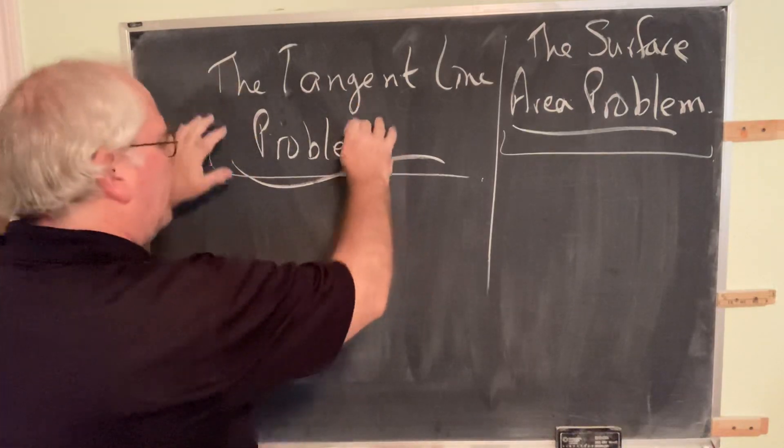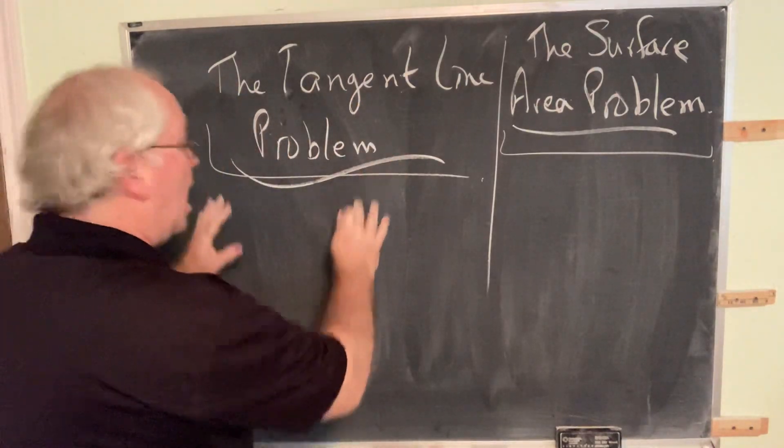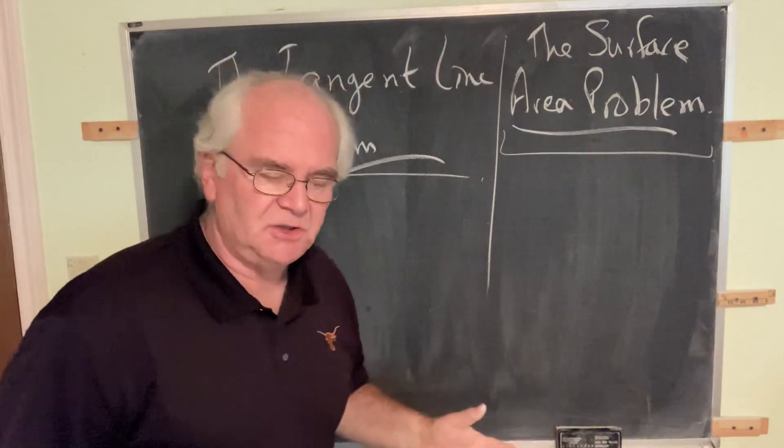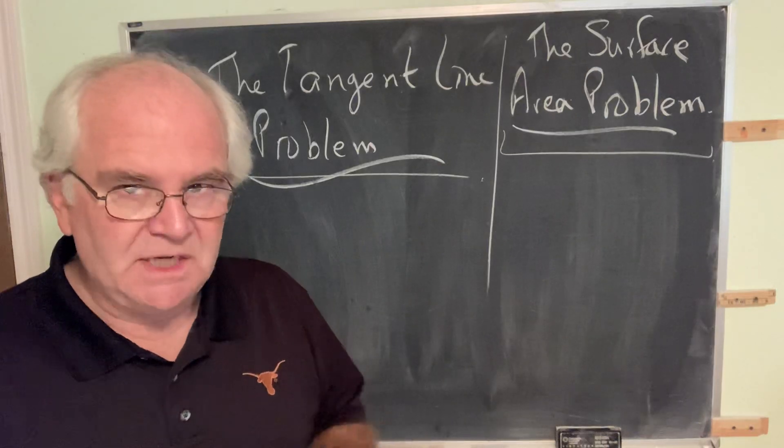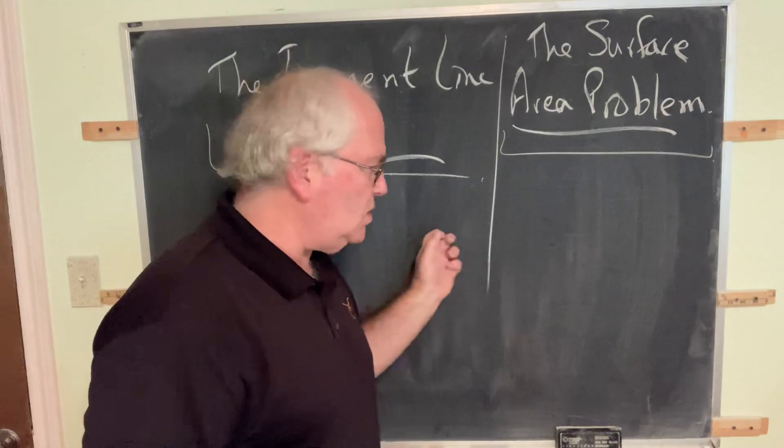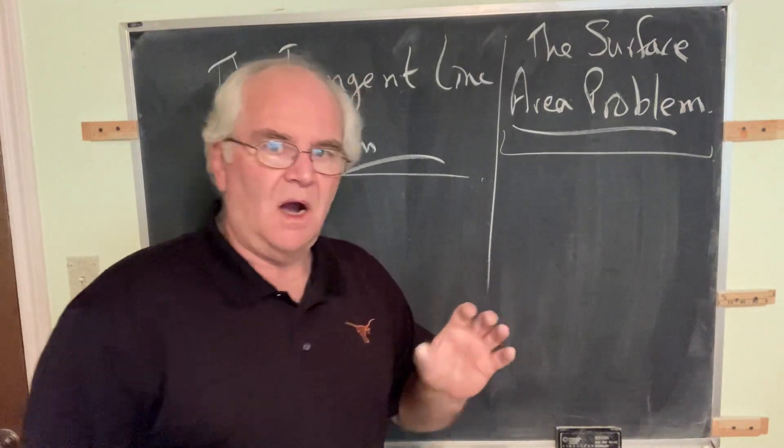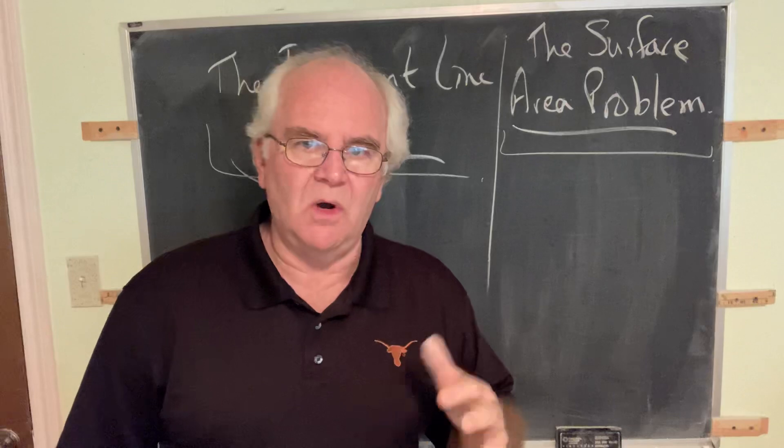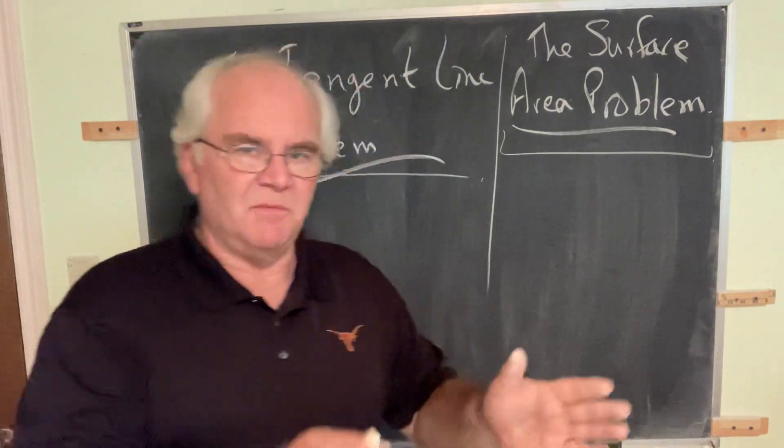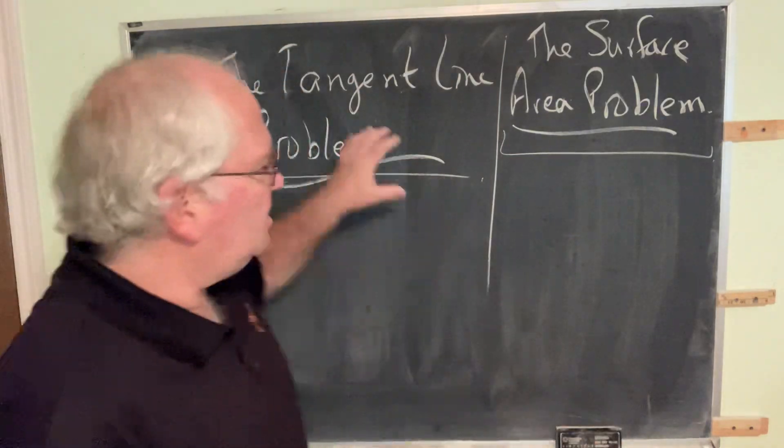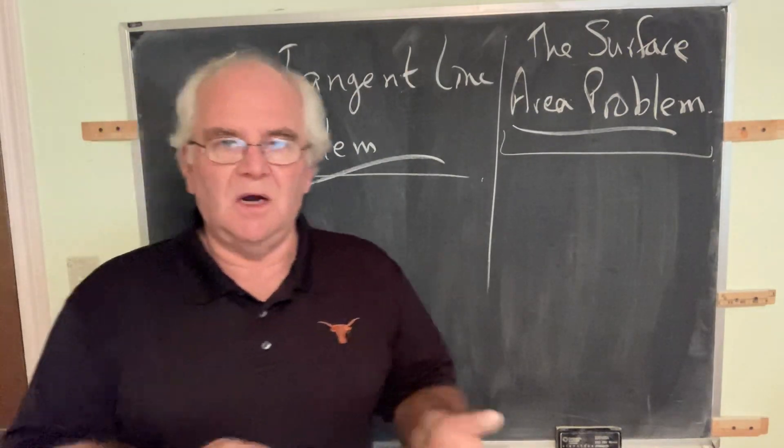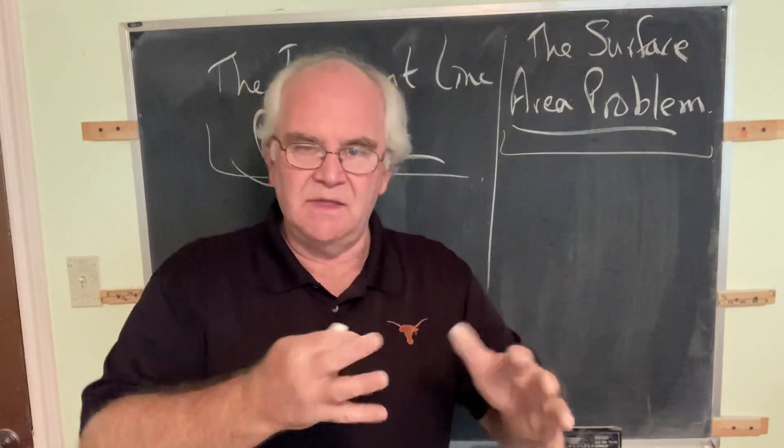We'll consider the tangent line problem and all of its ramifications, and then we'll turn our attention to the surface area problem. And then it turns out, as odd as it might seem, these two problems are opposite sides of the same coin. They really are the same problem looked at from a different perspective. The tangent line problem and the surface area problem, in large respects, are the same problem worked one way as the other.